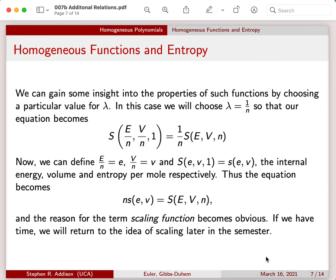That tells us that the way to scale from our original function is just to multiply it by one over n. And we can write the new quantities, the energy per mole, the volume per mole, in terms of a lowercase symbol. And since we're dividing the total entropy by the number of moles on the right-hand side, that's in fact the entropy per mole. So we can write that S of e, v, and one is the entropy per mole.